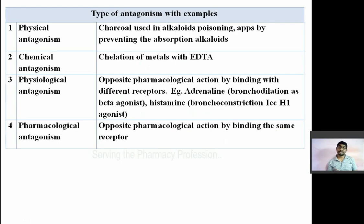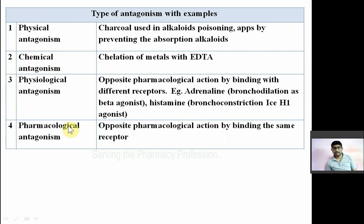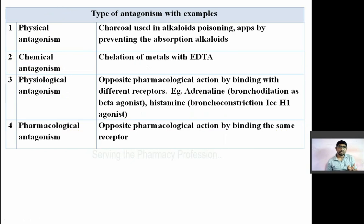We will now see the types of antagonism — very important and questions have already been asked many times. First is physical antagonism — any chemical or drug that antagonizes the effect by its physical action. For example, activated charcoal powder is used in alkaloid poisoning and acts by adsorption of the alkaloid on the charcoal surface. Next is chemical antagonism — antagonism due to chemical bonding. For example, chelation of metals by EDTA; in iron poisoning, desferrioxamine will chelate and bond with iron and prevent the poisoning.